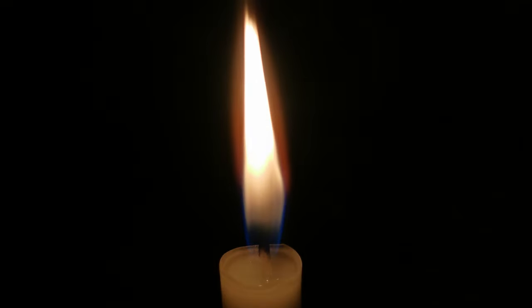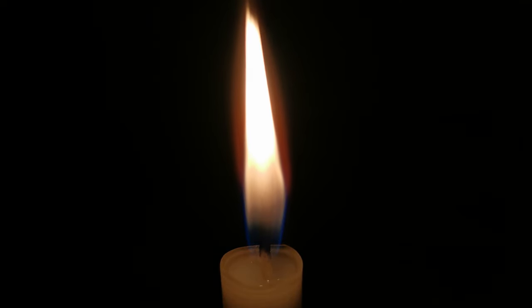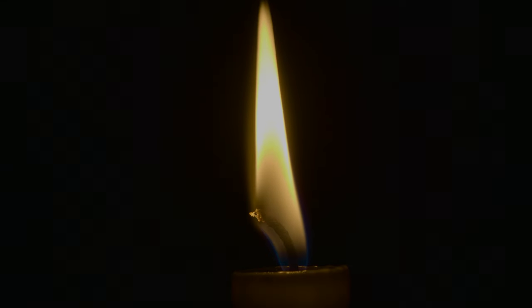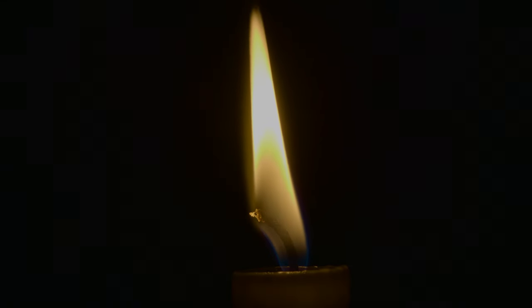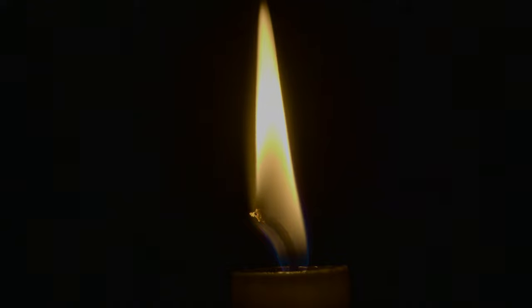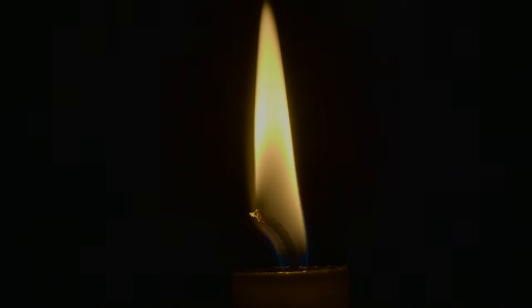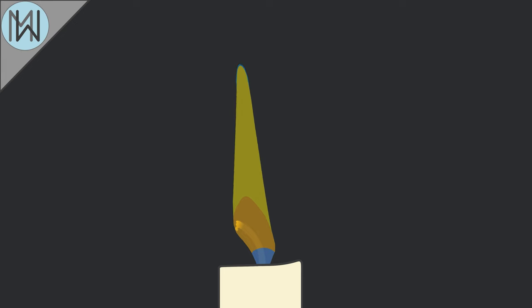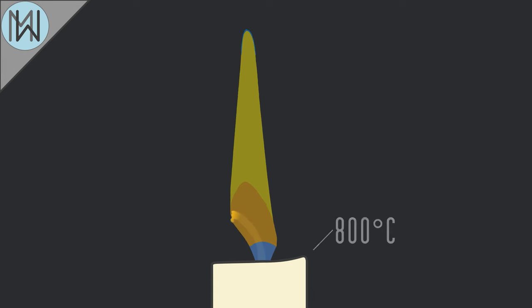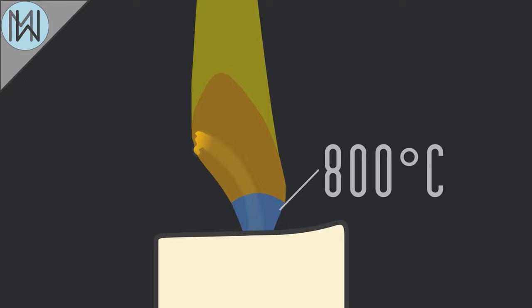A candle's flame is made up of a number of different regions, with temperatures hundreds of degrees apart. At the centre of the flame is an area of blue — rich in oxygen, this area burns wax vapour cleanly, but is only around 800 degrees C.